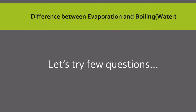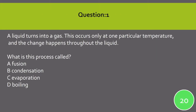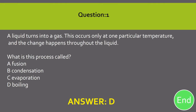Let's try a few questions on evaporation and boiling. First question: A liquid turns into a gas. This occurs only at one particular temperature and the change happens throughout the liquid. What is this process called? Option A: fusion. Option B: condensation. Option C: evaporation. Option D: boiling. The correct answer is D — boiling.